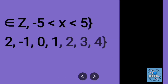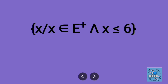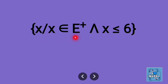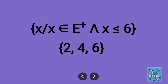Next example: { x | x belongs to positive even numbers and x ≤ 6 }. It means the number is less than or equal to 6, so 6 is included. Therefore, the numbers in tabular form are 2, 4, 6.